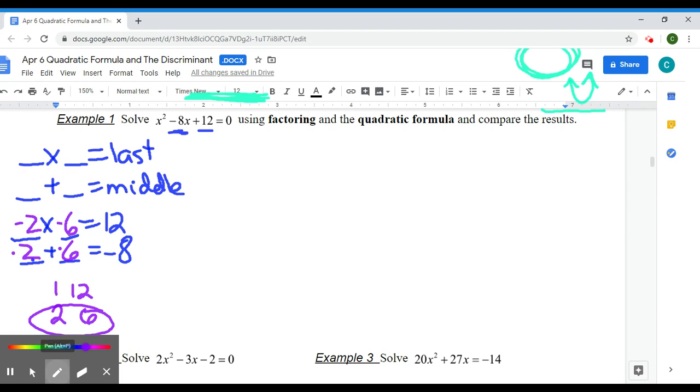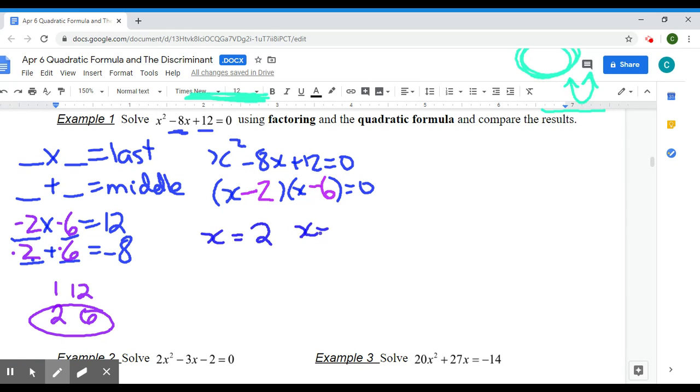Once we have our numbers, then we just put them into our answer. So we've got x squared minus 8x plus 12 equals 0. So when we factored, remember we have it looking like this, and then at the ends of each bracket is where we put the numbers we just found. So we came up with minus 2 and minus 6. Finish it off. That tells me that my x-intercepts are equal to positive 2 and positive 6. Excellent work.